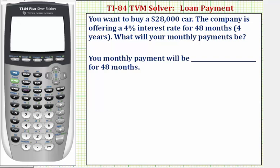Welcome to an example on how to use the TI-84 TVM solver in order to determine a loan payment. You want to buy a $28,000 car. The company is offering a 4% interest rate for 48 months or 4 years. What will your monthly payments be?